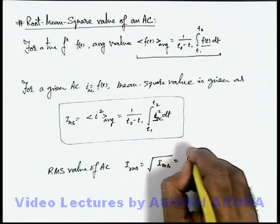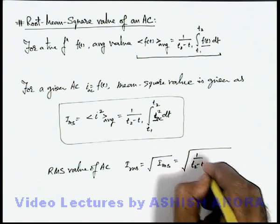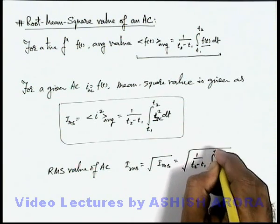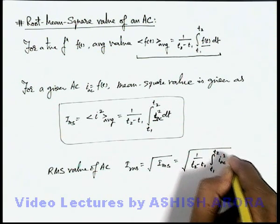which can be written as square root of 1 by t2 minus t1, integration from t1 to t2, IAC square dt.